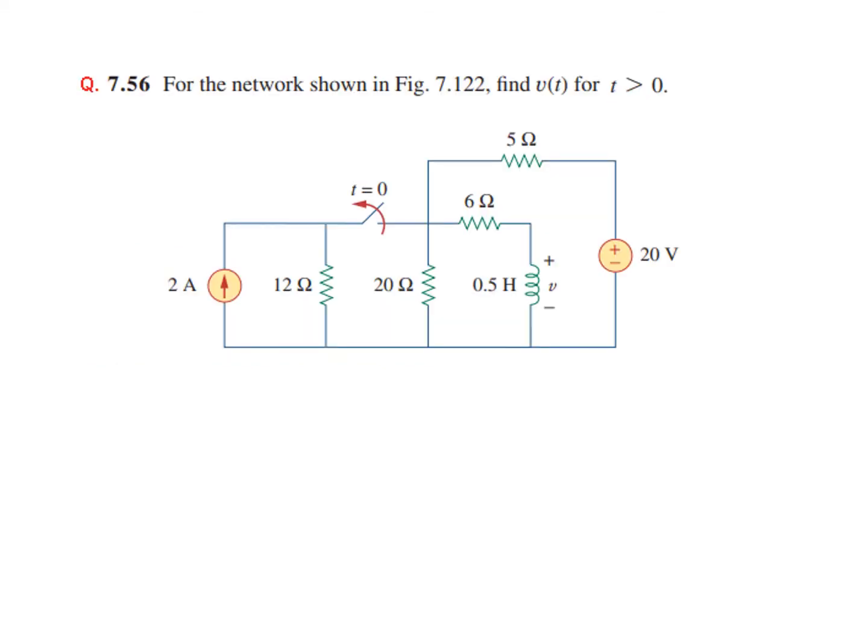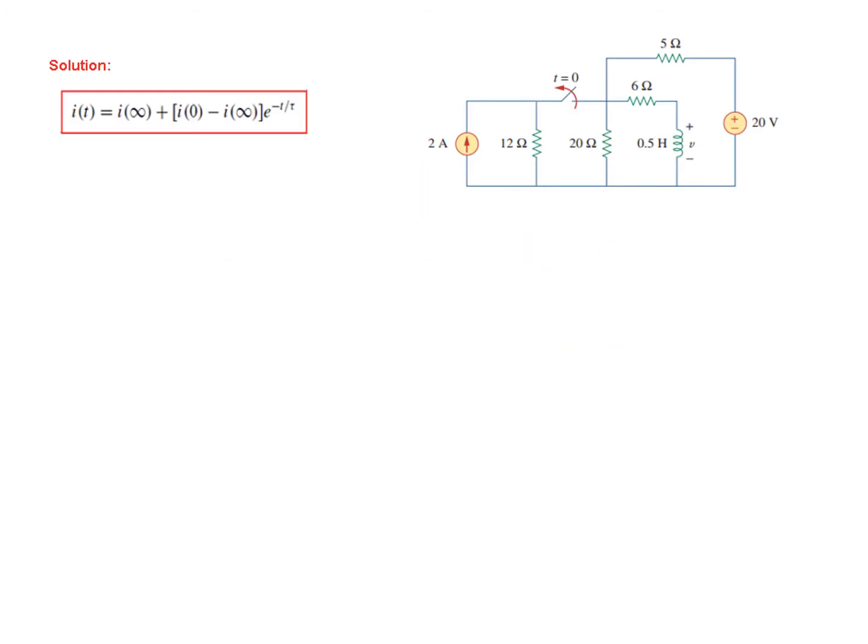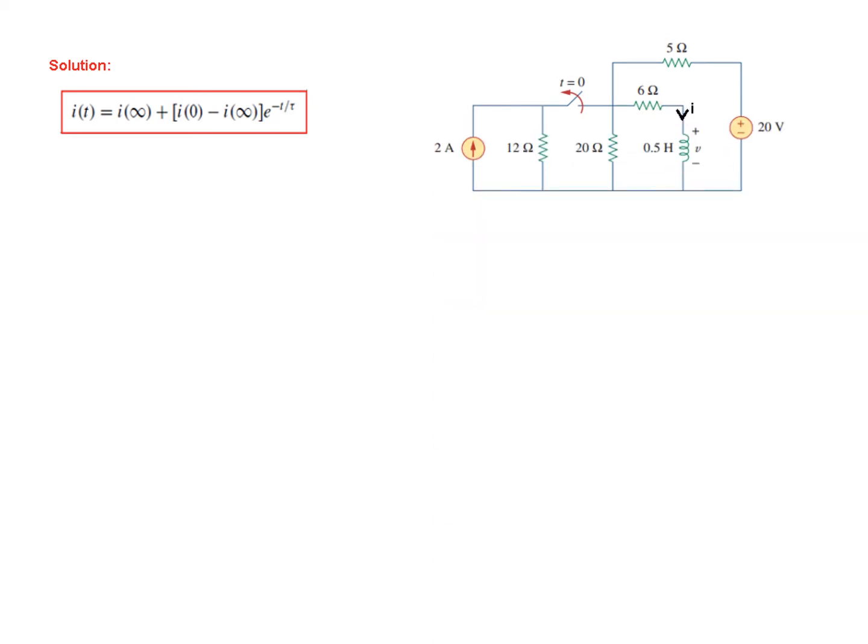This is the question. We have to find V(t), the voltage across the inductor. As I mentioned, we have to find these parameters. First of all, we find I(0). It is the current through the inductor. So this current is i(t), so we mark it as I or i(t).